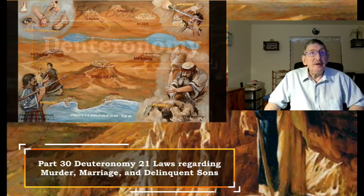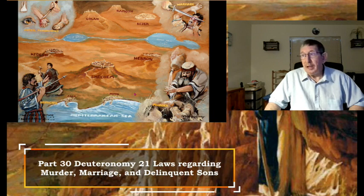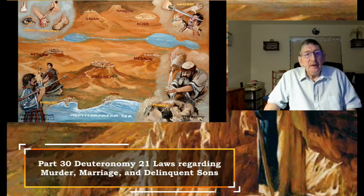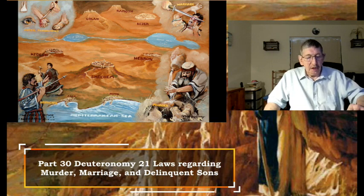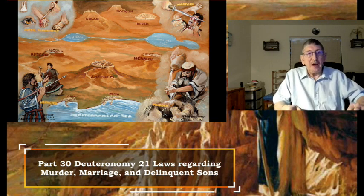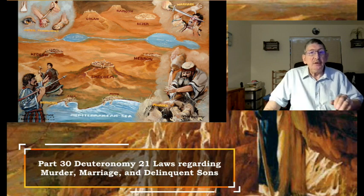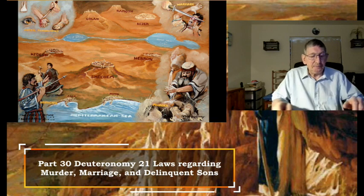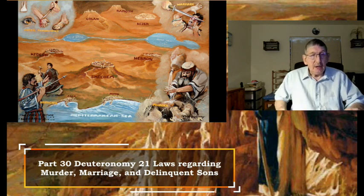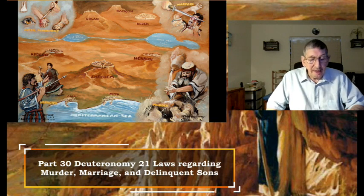The first part of this chapter deals with an interesting process about what happens if an apparent murder has happened near your town. We're going to talk about a slain person found near a town, and it's up to the elders to decide. This chapter actually ends the section on religious and national regulations which began with chapter 8.